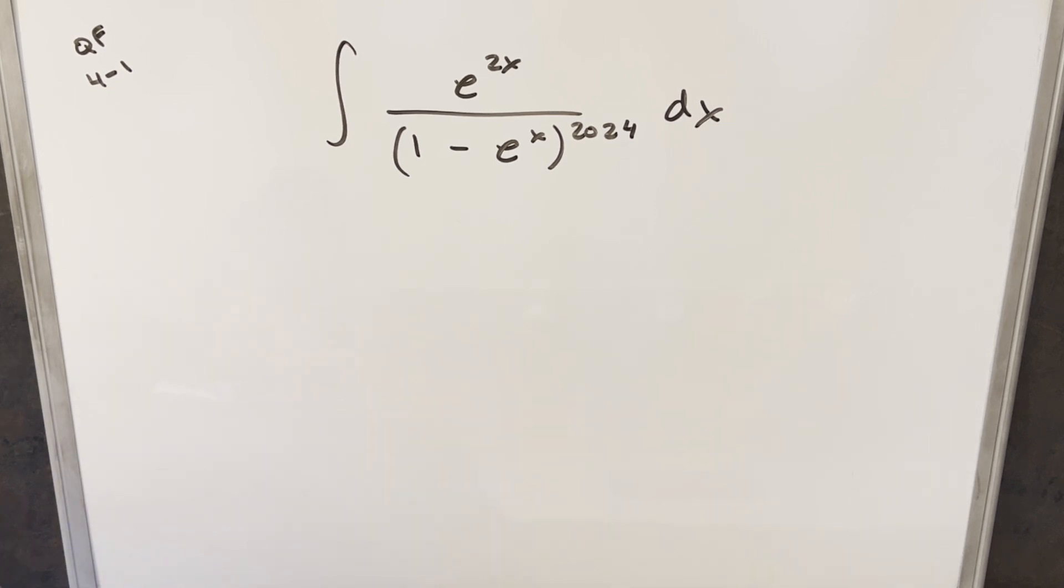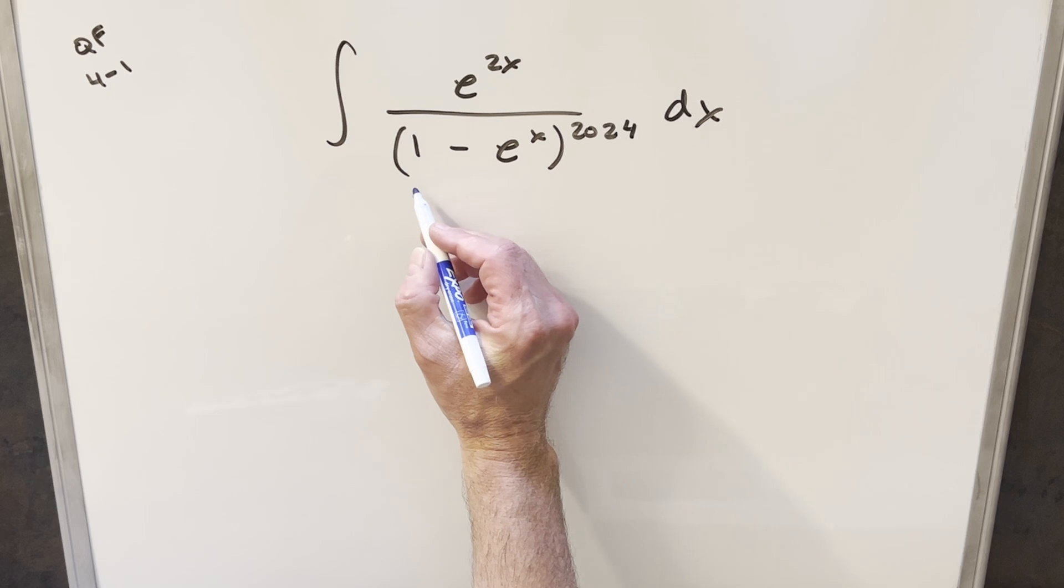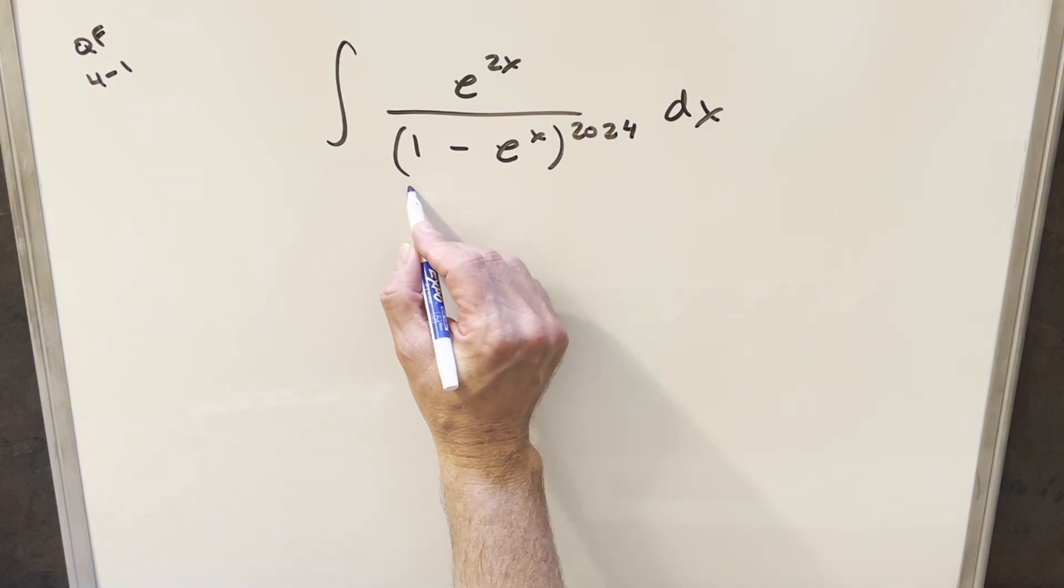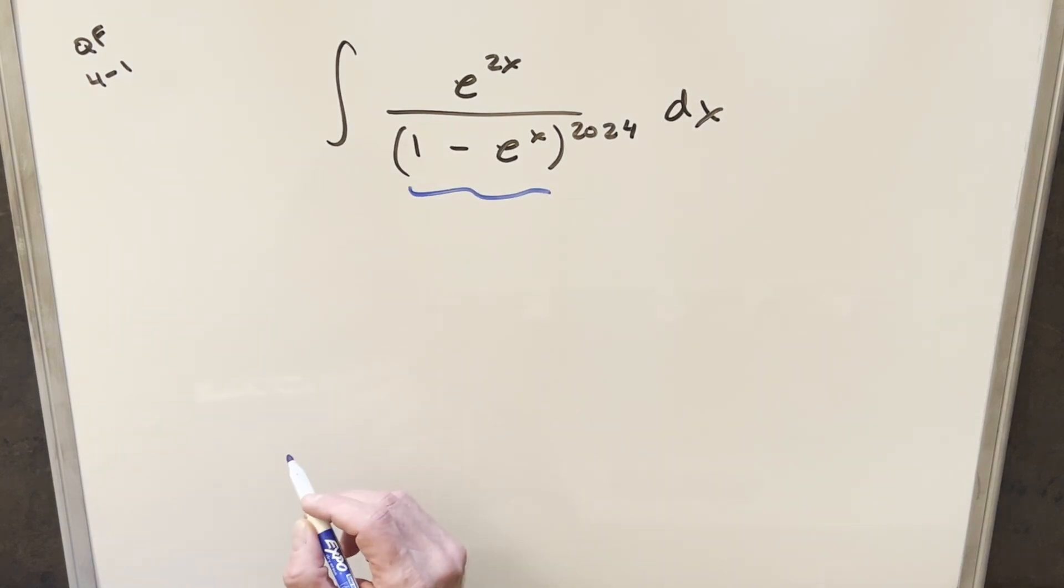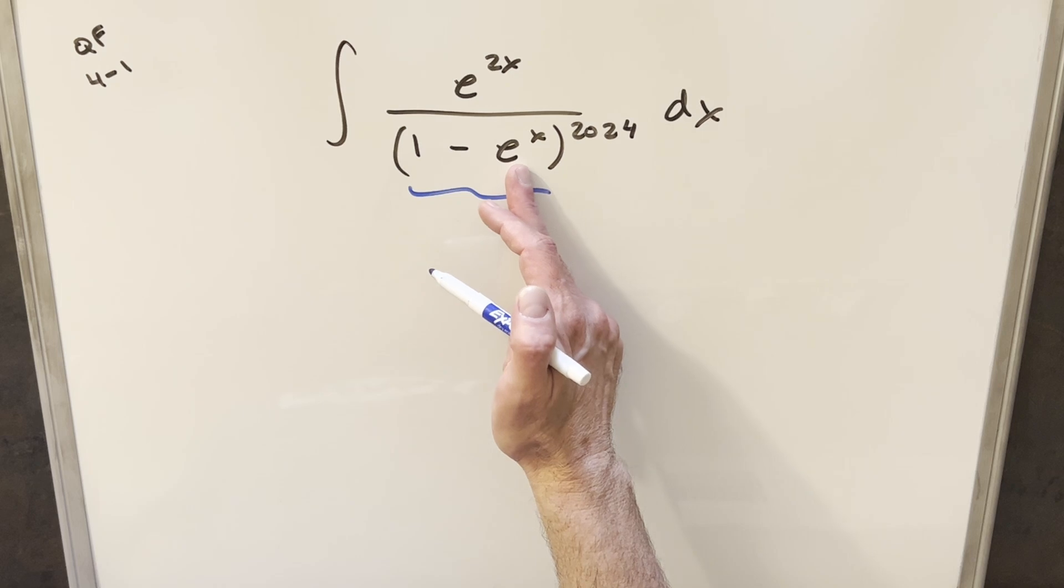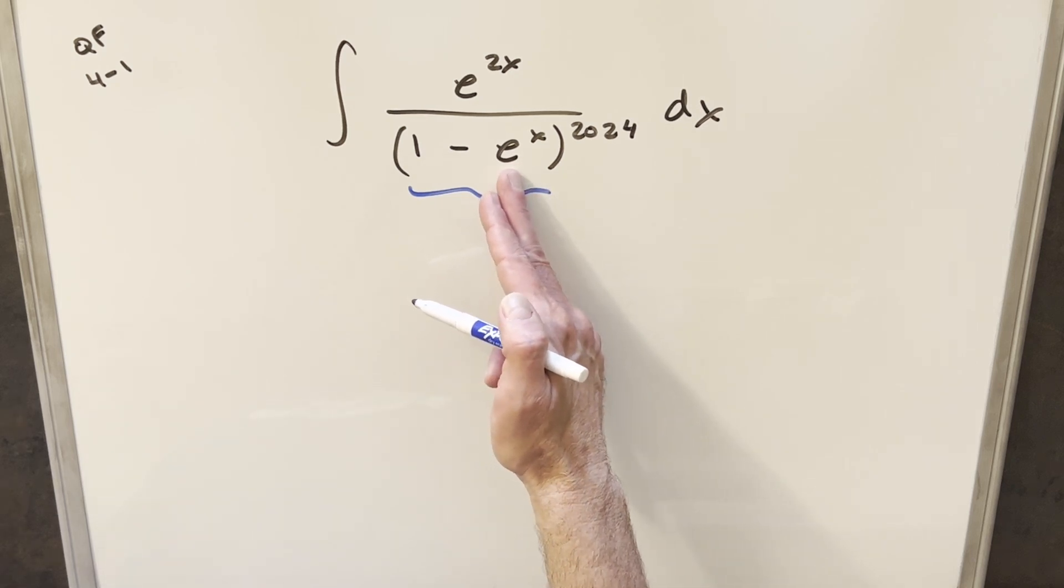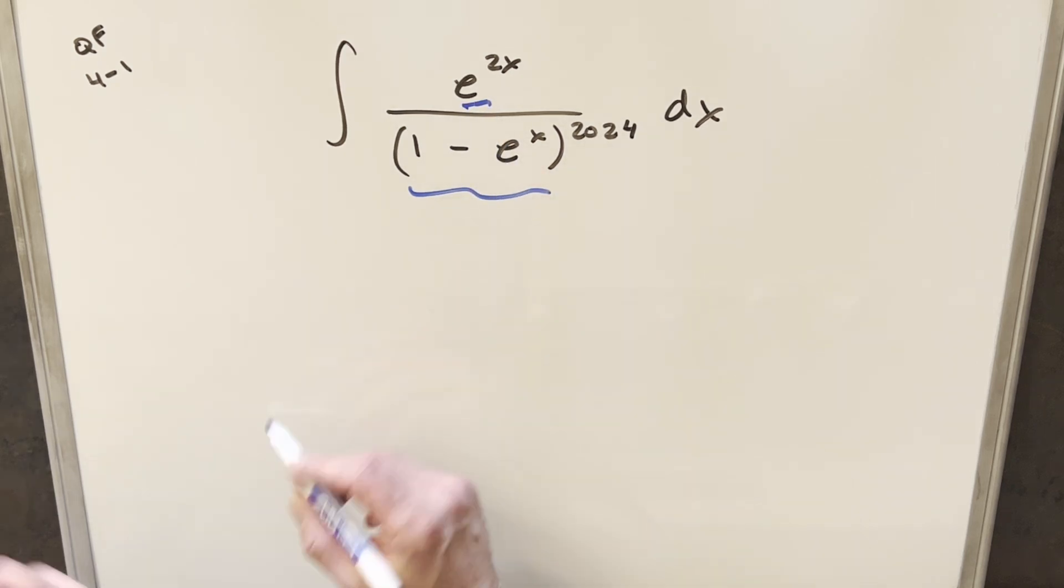To get started with this, the first thing I notice here is in the denominator, I kind of want to clean this up. This really looks like a good candidate for a u-substitution right here. The nice thing is we have e to the x here. The derivative of e to the x is e to the x, and we actually have an e to the x here in the numerator.